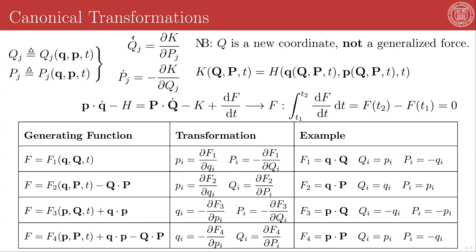What we're looking for is a new set of Hamilton's equations, so capital Q sub j dot is equal to the partial of some new Hamiltonian K with respect to the conjugate momenta P sub j, and similarly, the time derivative of that conjugate momenta is negative the partial of that new Hamiltonian K with respect to its generalized coordinate capital Q sub j. This new Hamiltonian K should be written as the original Hamiltonian as a function of the mappings from lowercase q and p to uppercase Q and P and time.